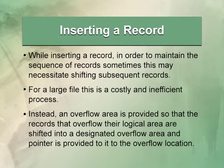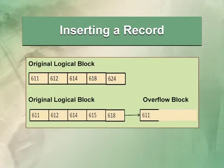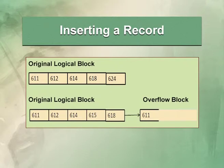In the diagram, the original logical block shows 5 records with primary keys 611, 612, 614, 618, and 624. We want to insert record with primary key 615. As 611, 612, and 614 exist, we need to give space to 615. Record 624 is moved to the overflow block, 615 is inserted after 614, then 618 follows, and a pointer is given pointing to the overflow block.